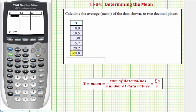And now we enter the data values. So 8.9, ENTER, 18.5, ENTER, and so on.